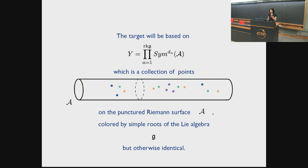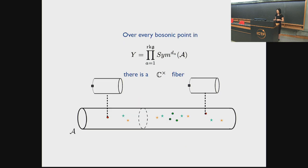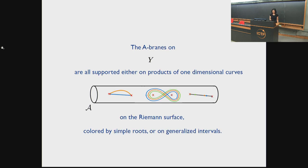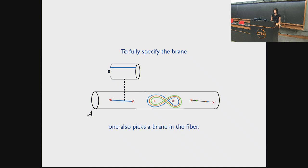The target space will be based on a product of symmetric products, one for each node of the Dynkin diagram, on the punctured Riemann surface. Think of it as a collection of points on this punctured Riemann surface colored by simple positive roots, but otherwise identical. Further, over every bosonic point in Y in our symmetric product, there's a C* fiber in the full target space. The A-branes on Y are supported on either products of one-dimensional curves on the Riemann surface colored by simple roots, or on generalized intervals — so you can describe them explicitly. To fully specify the brane, you also have to pick a brane in the fiber for every bosonic point.